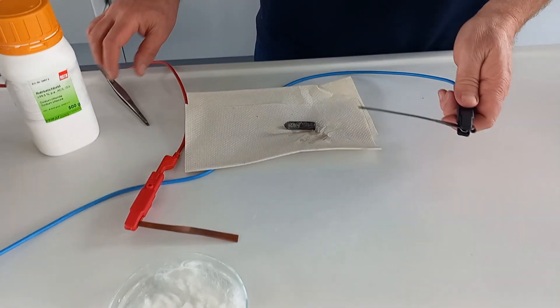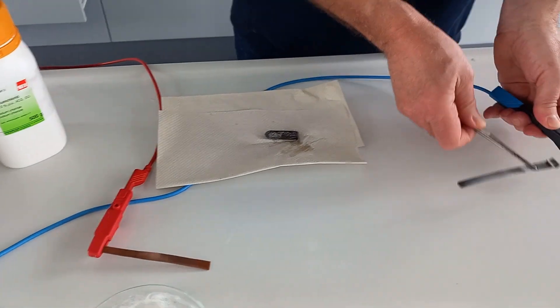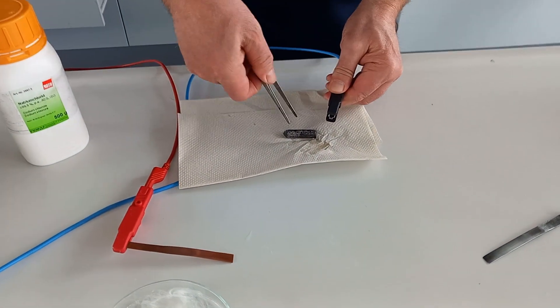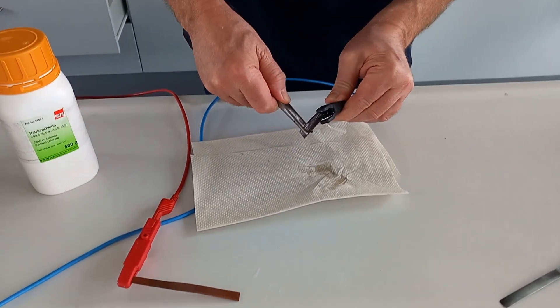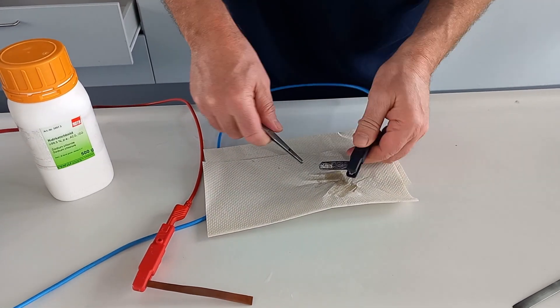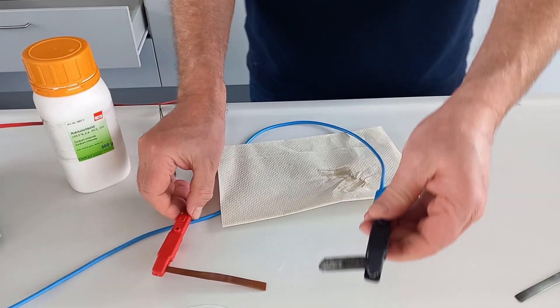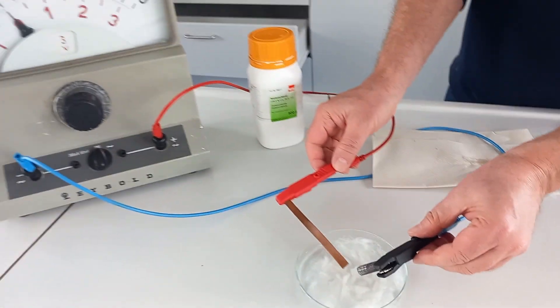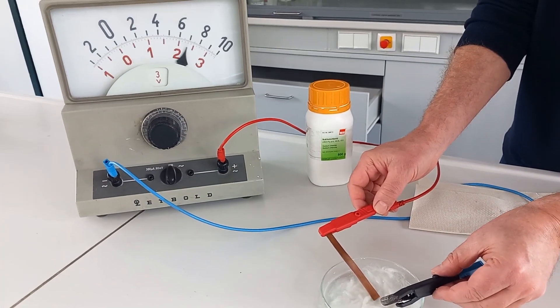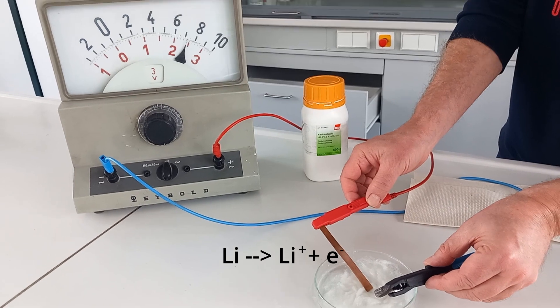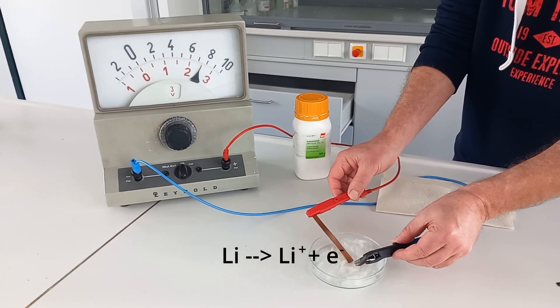Now we replace the zinc with lithium. As you can see, we will get a much higher voltage because lithium is a less noble metal.